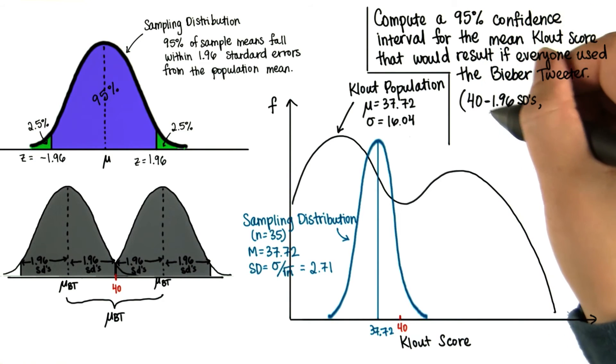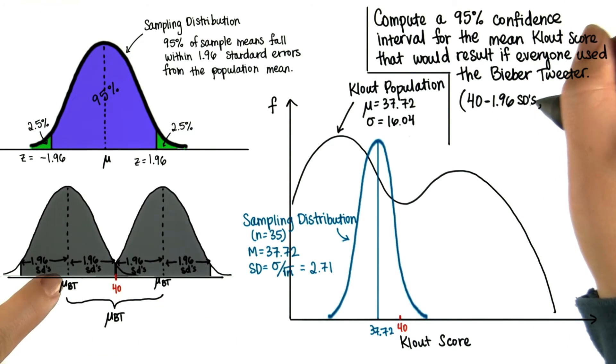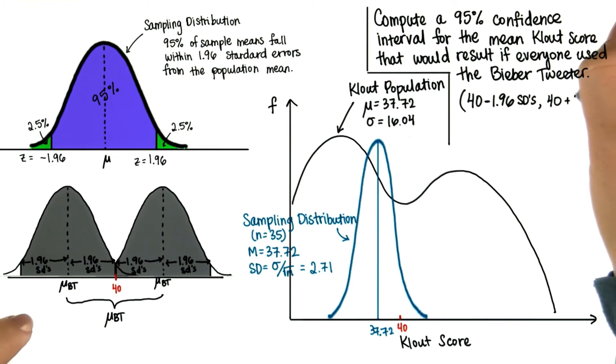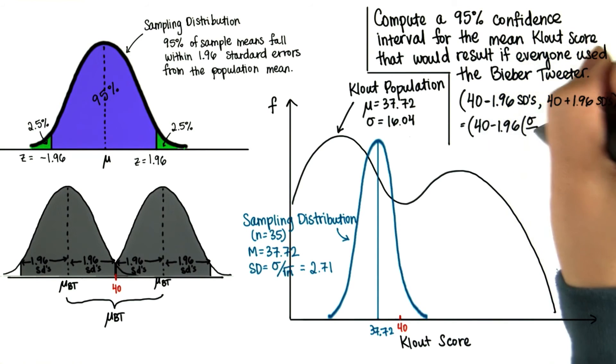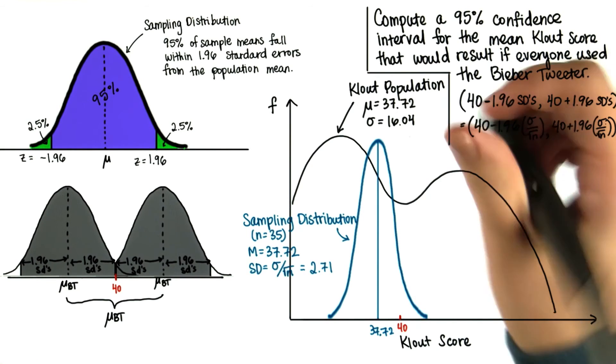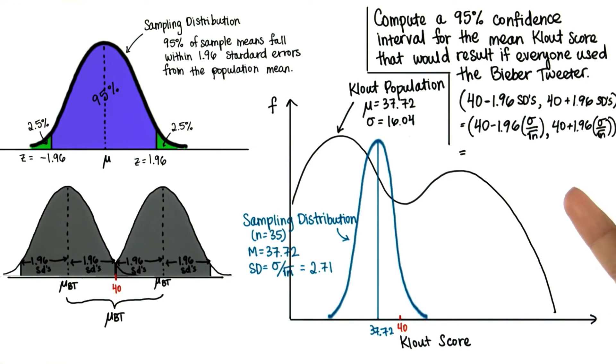So, here we should have 40 minus 1.96 standard deviations and then 40 plus 1.96 standard deviations. And we know that the standard deviation is our standard error. We already know that our standard error is 2.71.